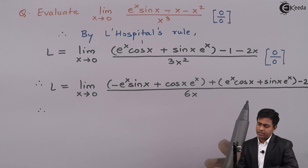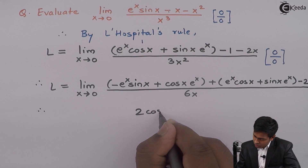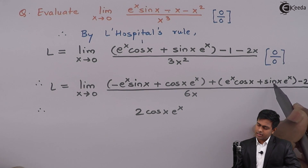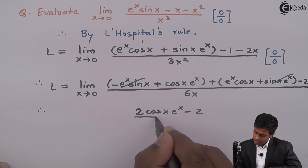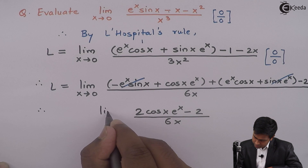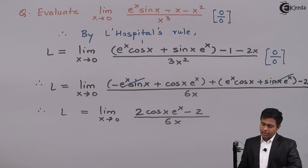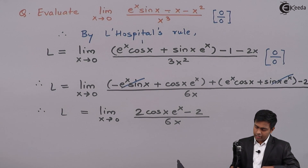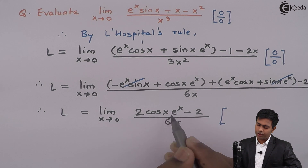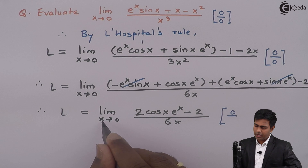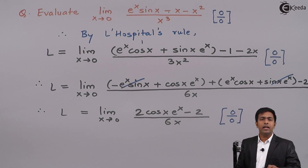Simplifying: cos x · e raised to x plus cos x · e raised to x gives 2 cos x · e raised to x. The sin x · e raised to x and minus sin x · e raised to x cancel out. We get 2 cos x · e raised to x minus 2, upon 6x. Substituting x as 0: 2 times 1 times 1 minus 2 gives 0 in the numerator, and 6 times 0 gives 0 in the denominator. So we are still getting an indeterminate form and apply L'Hôpital's rule again.